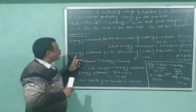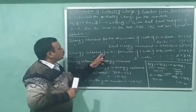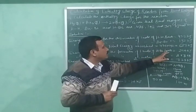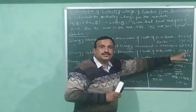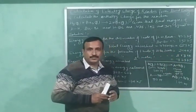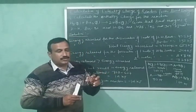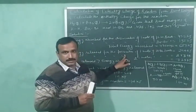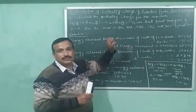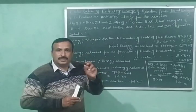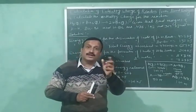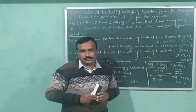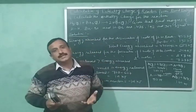The energy released for the formation of one mole of H-Br bonds is equal to 364 kilojoule. You can see that the energy released during the formation of one mole of H-Br is equal to its bond energy, that is 364 kilojoule per mole.